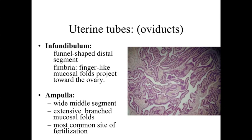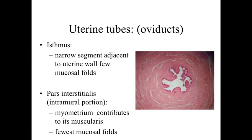The fimbria don't completely surround the ovary, but almost like a catcher's mitt, they wrap towards it and increase the likelihood that the egg being released is going to be picked up by the oviducts and transported through them. The infundibulum has lots of branches and spaces present there. The ampulla is going to be a wide middle segment of the oviducts with lots of branching mucosal folds, and this is primarily going to be our location for fertilization to occur.